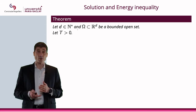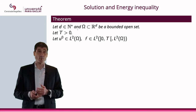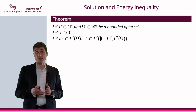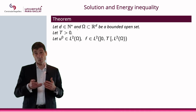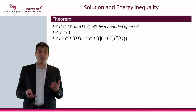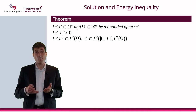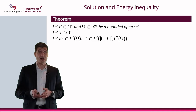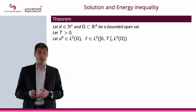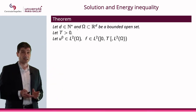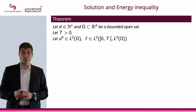T is going to be a positive number, and I'm going to consider U₀, which is going to be the initial condition, and F, which will be the heat source — the data — and these will be in these spaces here.